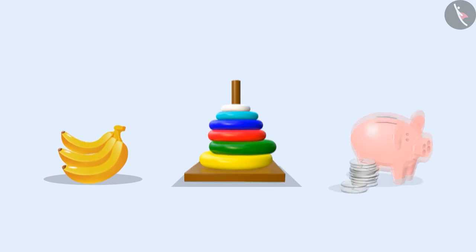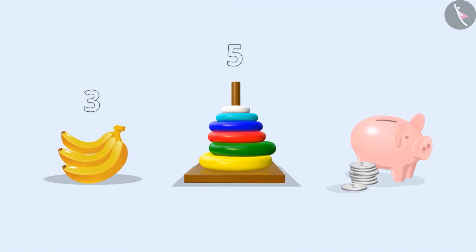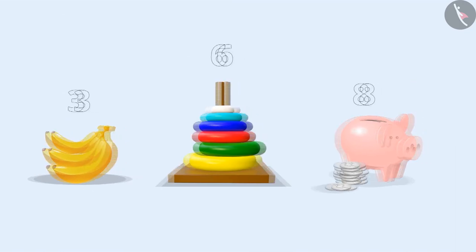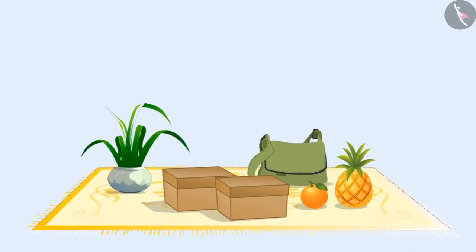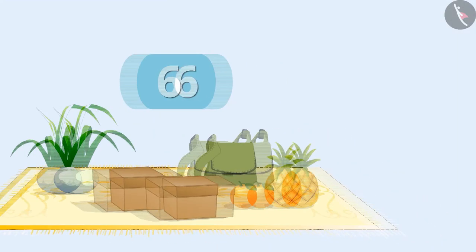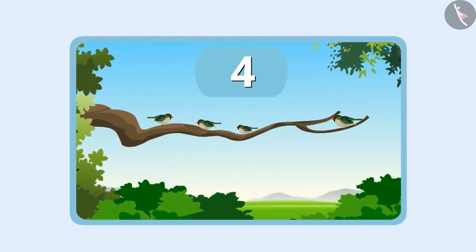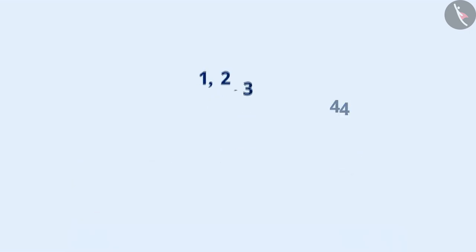You might have done counting several times in your life — counting the students in a class, counting various objects, counting the birds on a tree, etc. Whenever we start counting, numbers like 1, 2, 3, 4, etc. come to our mind naturally. That's why we call counting numbers as natural numbers.